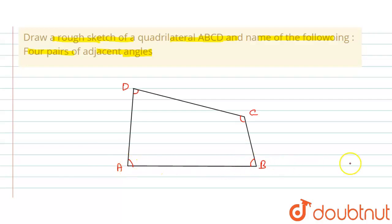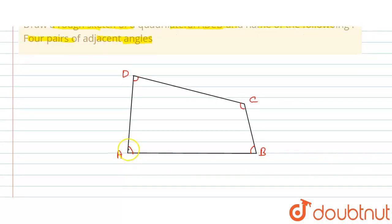So here, angle A and angle B are the adjacent angles because this is the common arm AB. So the first pair of adjacent angles, that is angle A and angle B.